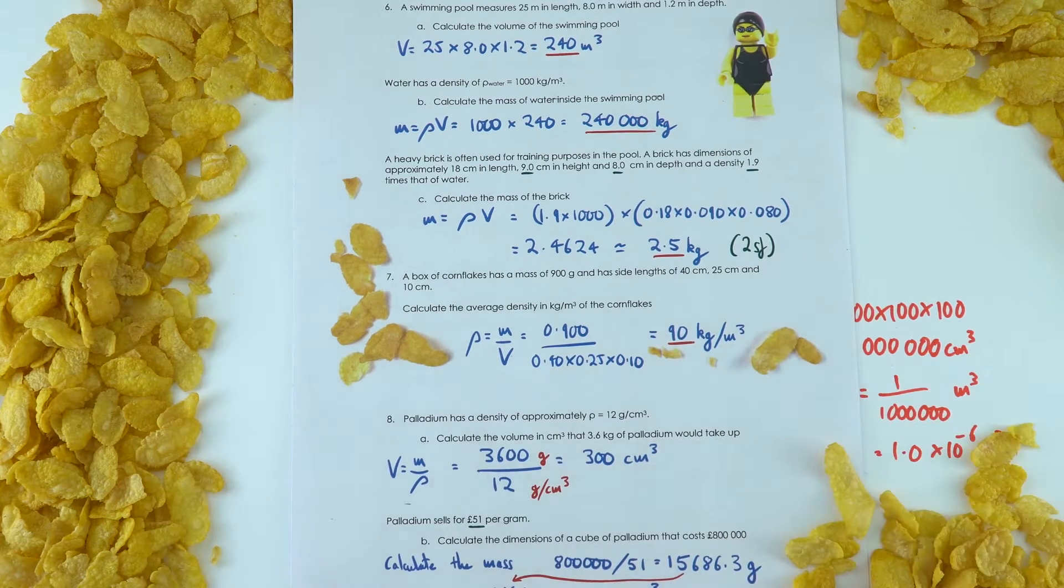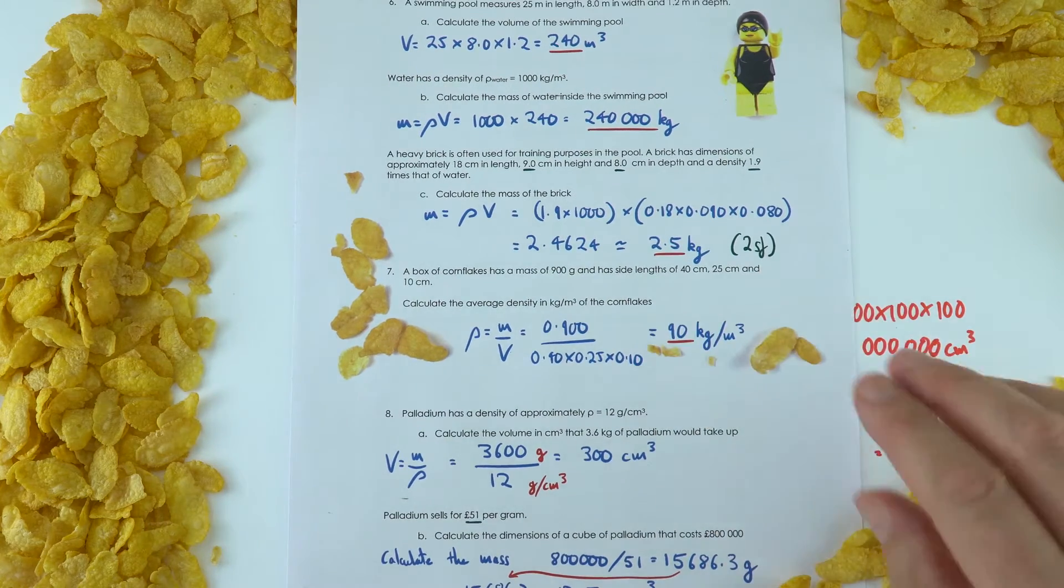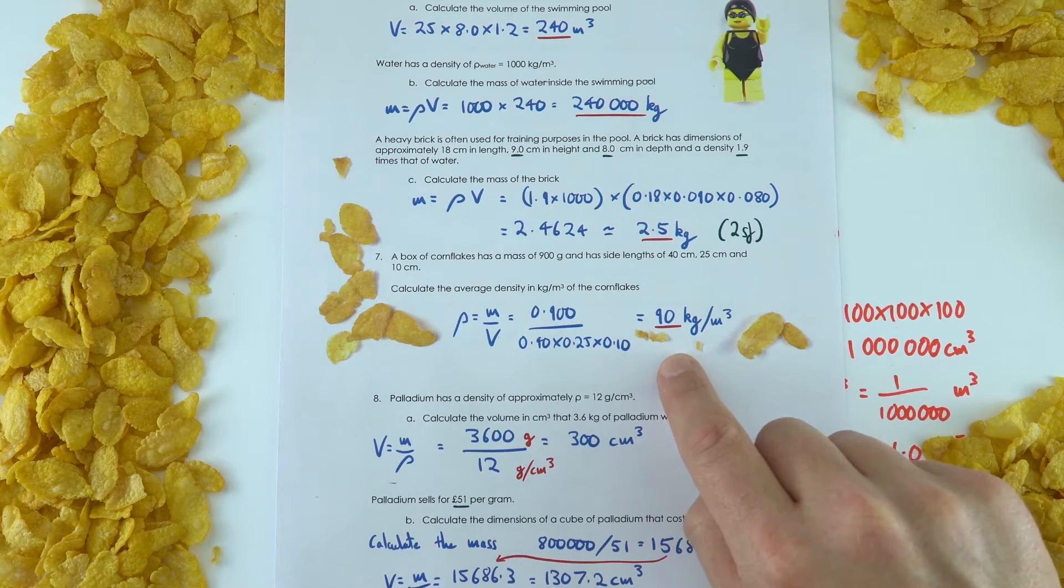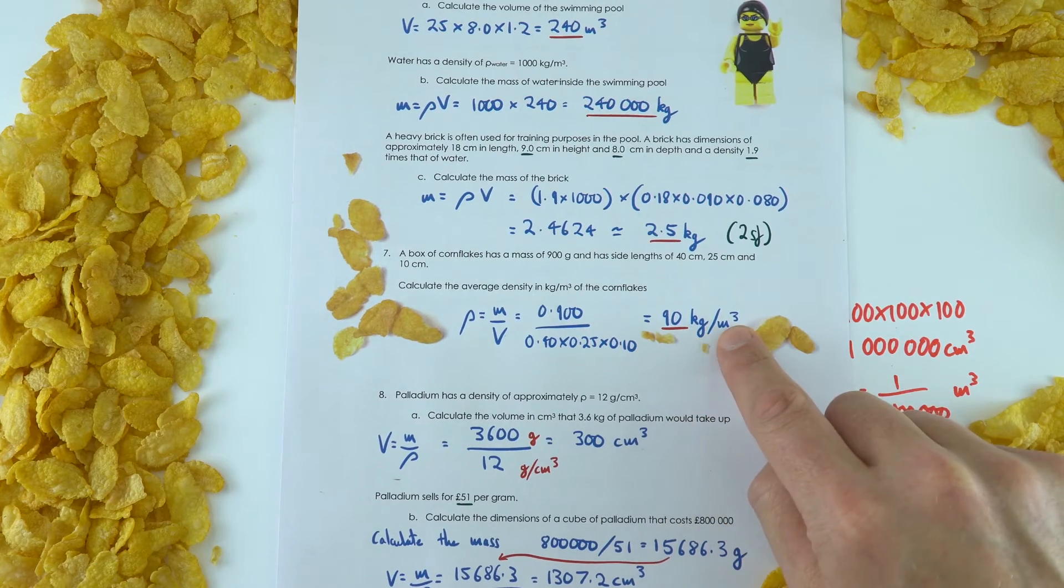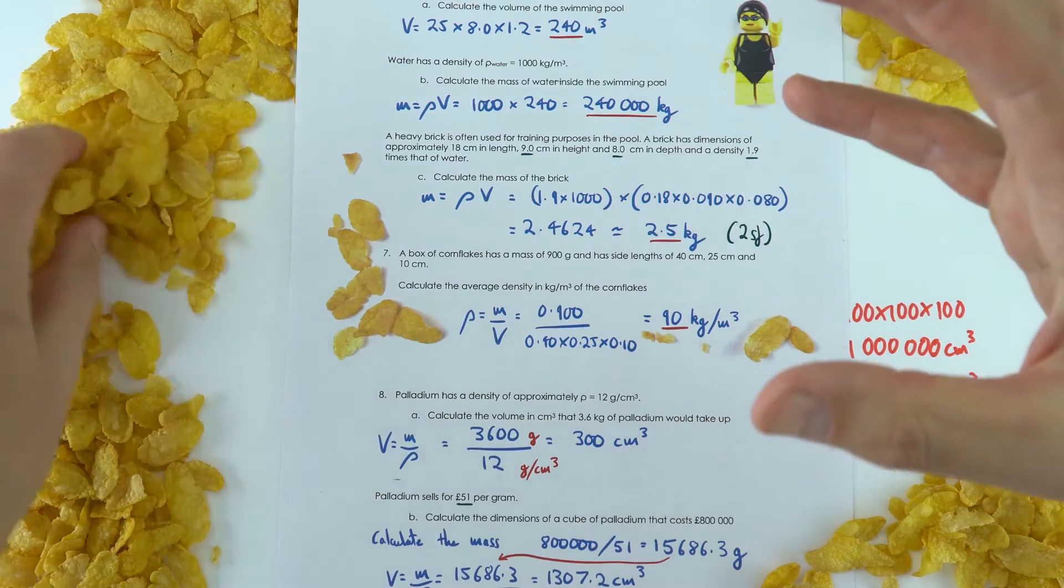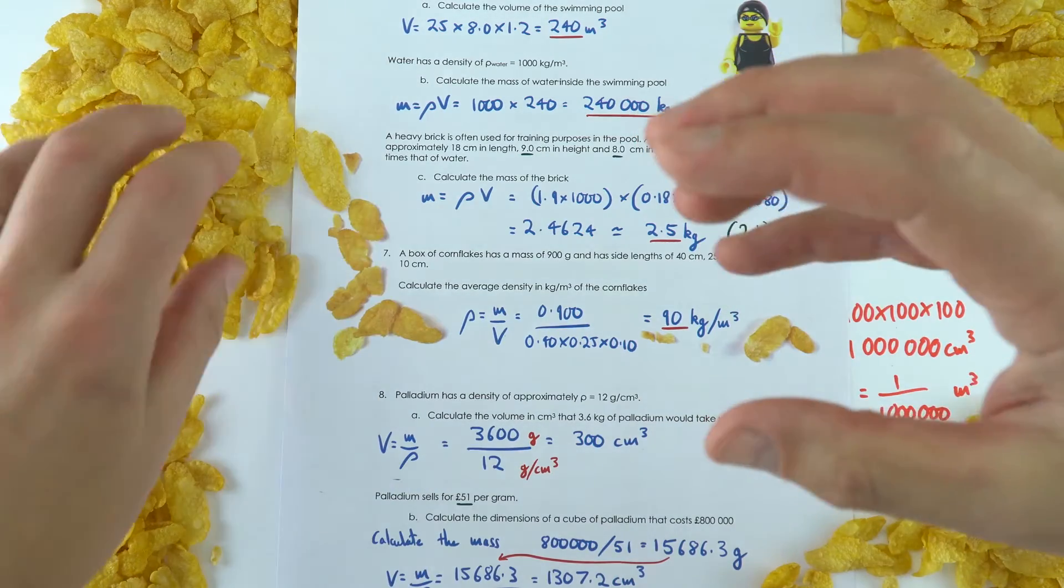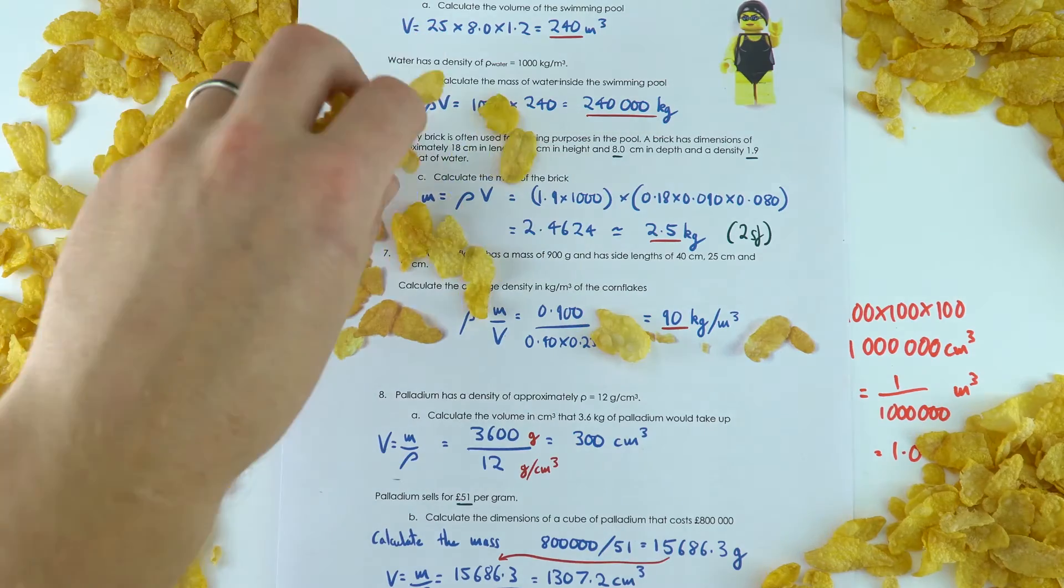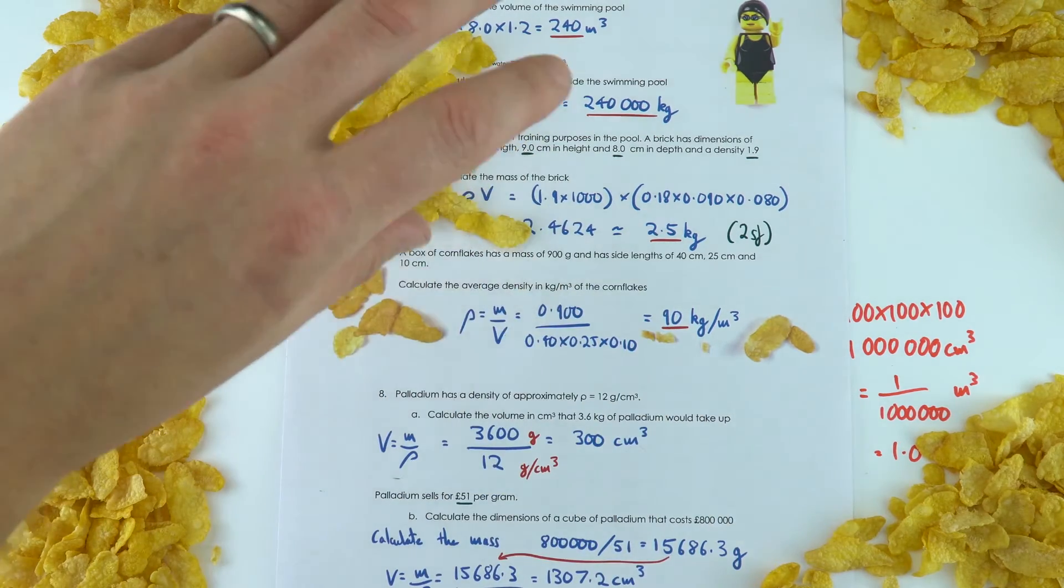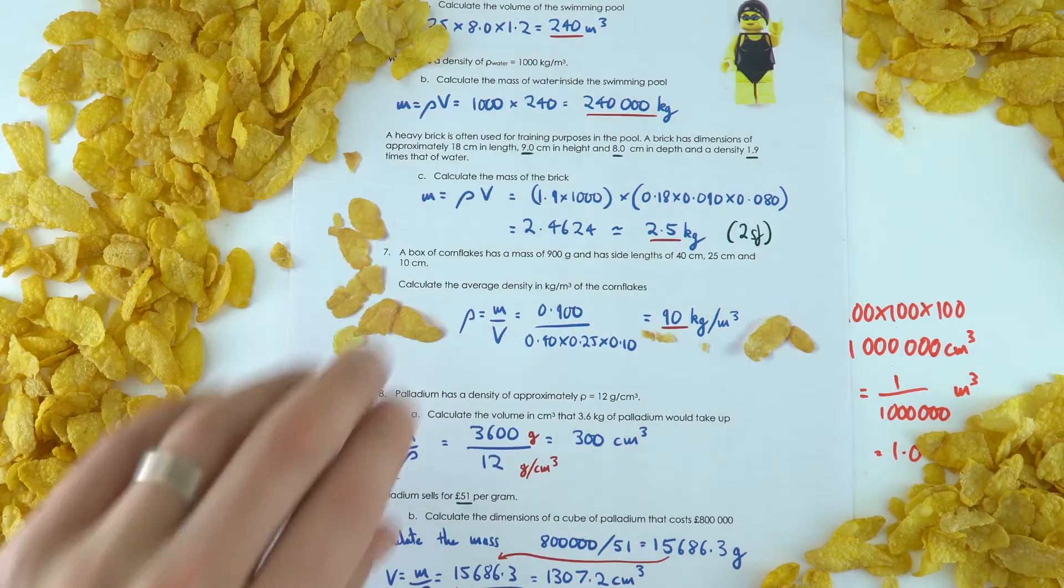Now the average density of a box of cornflakes is actually based on the information on the packet, it's 90 kilograms per cubic meter. So imagine you had a cubic meter filled up with a load of cornflakes, then because there's a lot of air gaps between these, their average volume, or the average mass of a cubic meter would be about 90 kilograms. That's a lot of cornflakes.